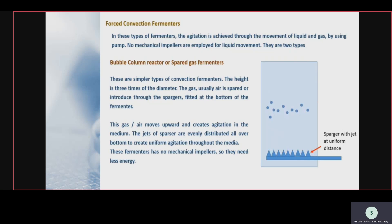The sprayers, called spargers, are fitted at the bottom of the fermenter — comb-like structures at the bottom used to spray air or gas. When the gas molecules or air move upward, they create agitation in the medium. Jets or even distributors are placed at the bottom to create uniform agitation throughout the media. These fermenters have no mechanical impellers so they need less energy.